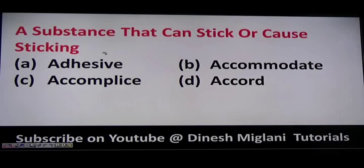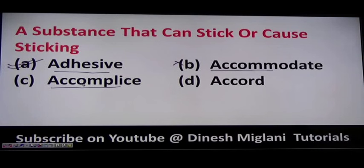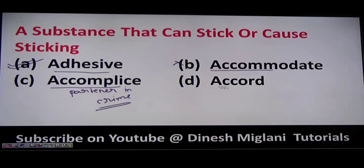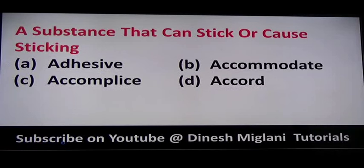The next question is: a substance that can stick or cause sticking. The answer is adhesive. You know about adhesive stickers — if a sticker has gum pasted behind it, it is an adhesive sticker. Other terms: accommodate means to adjust yourself; accomplice means a partner in crime; accord means agreement. The answer is A, adhesive.